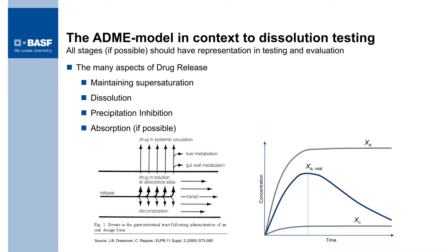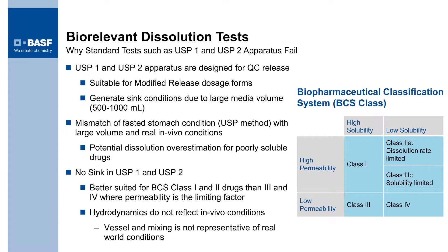Here's your ADME model, and basically some of the many aspects we need to start looking at to accurately monitor what's going on: supersaturation, dissolution behavior, precipitation inhibition, and absorption. These are the broad stroke categories we're trying to address when finding more bio-relevant testing media and methods. The USP1 and USP2 tests were intended for quality control work, but are not necessarily representative of a real in vivo setup. We've seen a tremendous amount of examples of why this is not accurate over the past two days — and I've been keeping count: this is the eighth time you've seen that particular slide.